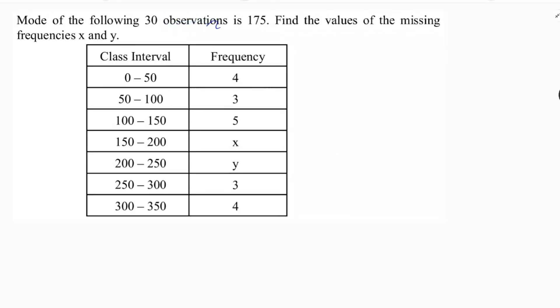Mode of the following 30 observations is 175. Find the values of the missing frequencies x and y. So here, mode is 175 and total observations are 30.